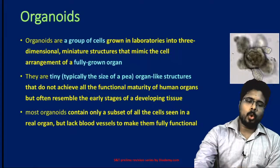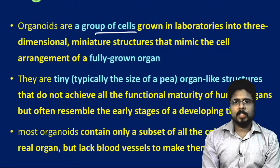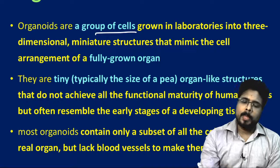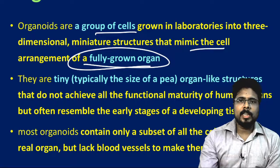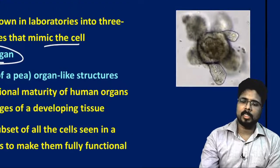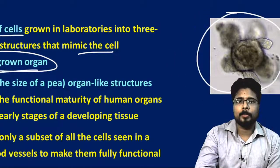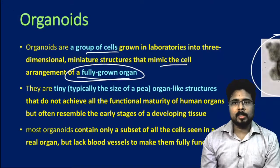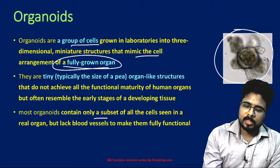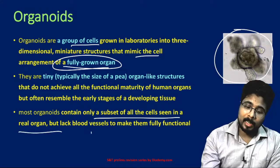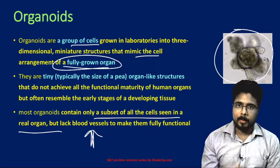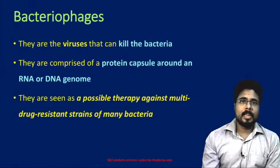Organoids are a group of cells grown in laboratories into three-dimensional miniature structures that mimic the cell arrangement of a fully grown organ. However, these tiny organ-like structures do not achieve all the functionality of a mature human organ. Most organoids contain only a subset of the cells seen in real organs and lack real blood vessels to make them fully functional. As research continues, we may achieve fully artificial organs that can be implanted into human beings.